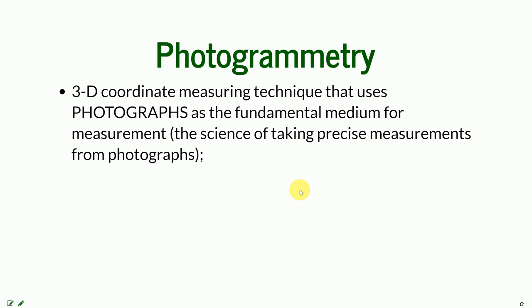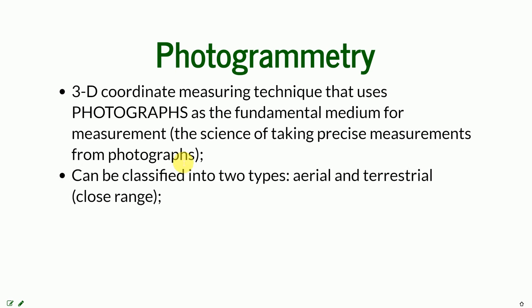Going in depth into the definition of photogrammetry: it is a three-dimensional coordinate measuring technique that uses photographs as the fundamental medium for measurement. In short terms, it's the science of taking precise measurements from photographs. It can be classified into two types — aerial, when it comes to aerial imagery, and terrestrial, which is taken from the ground, also called close range because the sensor is close to the object.